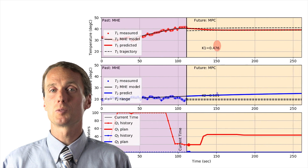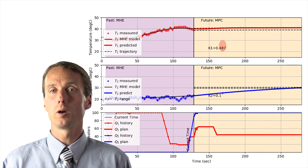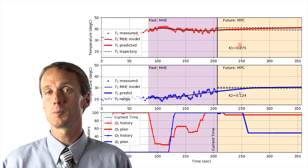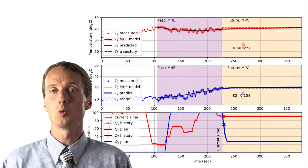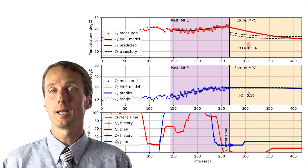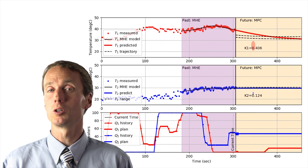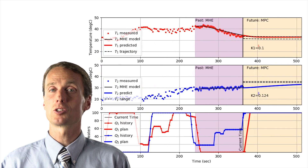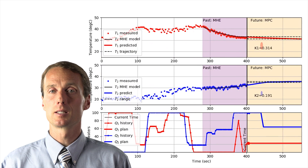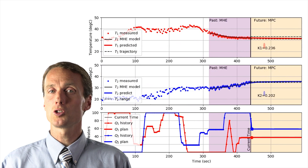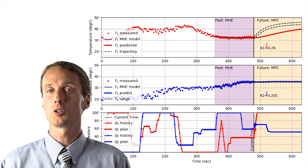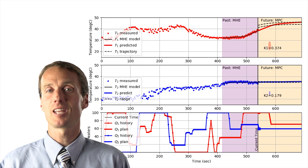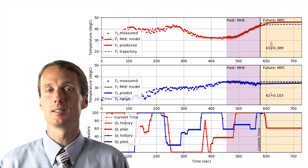The National Science Foundation sponsored a report on chemical engineering academia-industry alignment for expectations about new graduates. The report identifies a strong industrial need for practical understanding of process control and system dynamics. Industry feedback also suggested more weight on translating theory to practice in a way that is scalable for large class sizes.